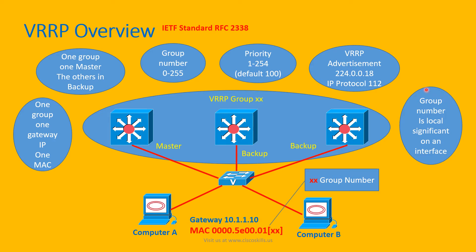The group number is locally significant on an interface. For example, if a master layer 3 switch has another interface, we can configure that interface for group number 1 as well, but it serves a different set of clients.